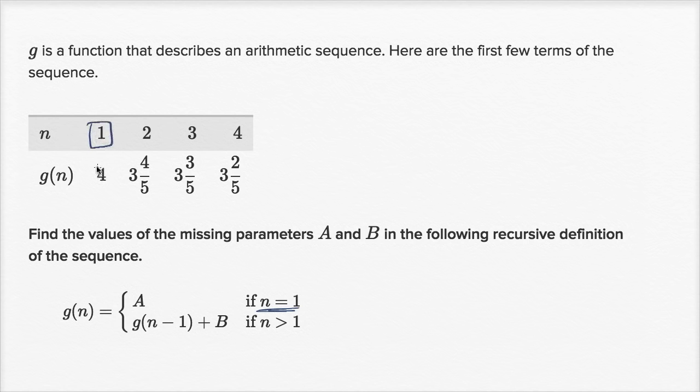the first term when n equals one is four. So A is equal to four. So we could write this as g of n is equal to four if n is equal to one.